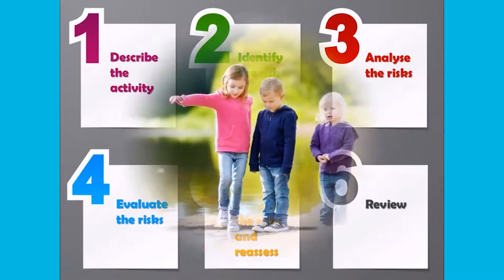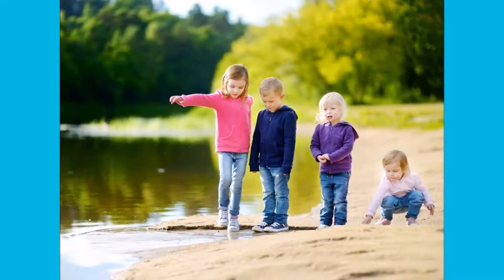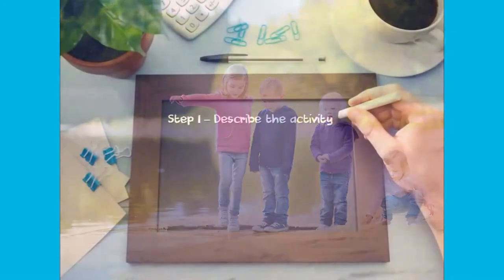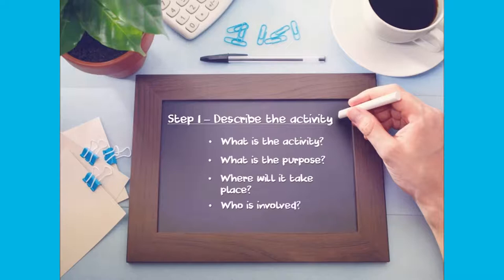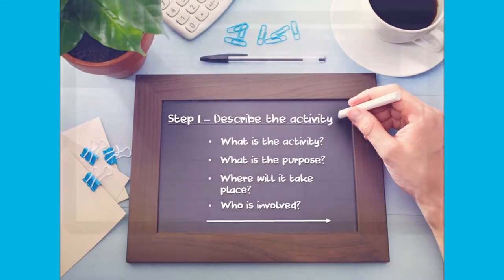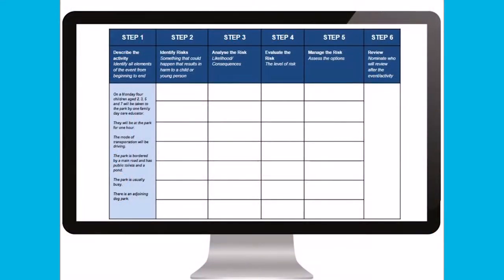We will now work through the example of taking children on an excursion to the park. Step one is to describe the activity — what is the activity and what is the purpose, where is it going to take place, and who is involved? For our example, the activity could be described as: on a Monday, four children aged two, three, five and seven will be taken to the park by one family daycare educator for one hour. The mode of transportation is driving. The park is bordered by a main road and has public toilets and a pond. The park is usually busy and there is an adjoining dog park.